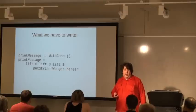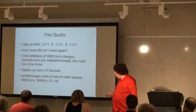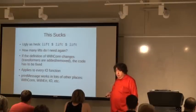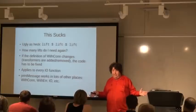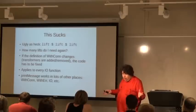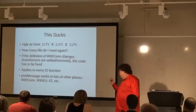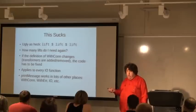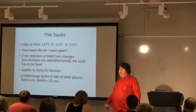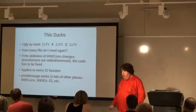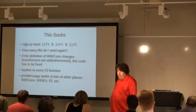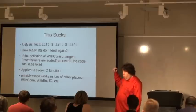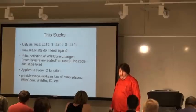This gets really annoying very quickly. First, it's ugly — lift, lift, lift. Second, how many lifts do you need? I can never remember — is it two, three, four? Keep adding lifts until the compiler stops complaining. And if you change the definition of WithCon to add or remove a Monad transformer, now you have to go through and fix all your code. You've got to do this with every IO function — every time you want to print a message or connect to the database.